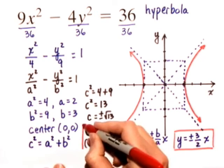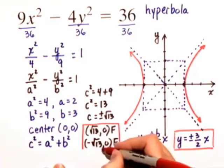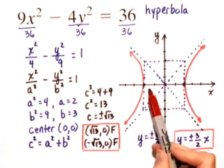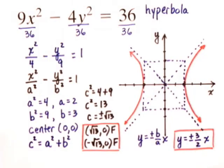The location of the foci are right here, plus or minus the square root of 13 and 0. The vertex is located at 2, 0, and the other vertex is at negative 2, 0. And here is the graph of our hyperbola.